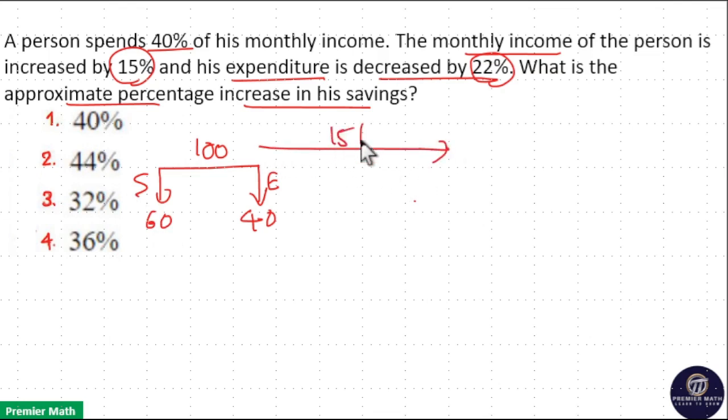Now, income increased by 15% means new income is Rs. 115. And here expenditure decreased by 22%, so decreased by 22% means 22% of the previous expenditure is decreased. Now, remaining is 78% of the previous expenditure which is equal to 78% of previous expenditure is 40%.